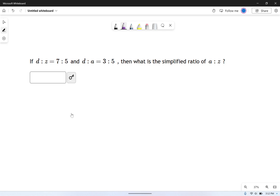So I could rewrite this and say the following. I'm going to say d divided by z, that's that ratio, equals 7 divided by 5. And I'm also going to say d divided by a equals 3 divided by 5. That's all the information they gave me. And what they want is a over z.